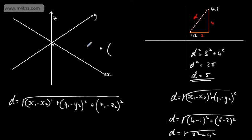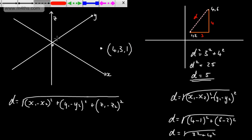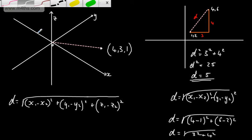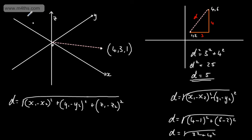So if I put a point just here with coordinates — an x-coordinate of 4, a y-coordinate of 3, and a z-coordinate of 1 — essentially I've just gone across, to the left, and then up. Now let's say we have another point just here. I'm going to give this a negative x-coordinate of minus 3, a positive y-coordinate of 1, and a positive z-coordinate of 2.